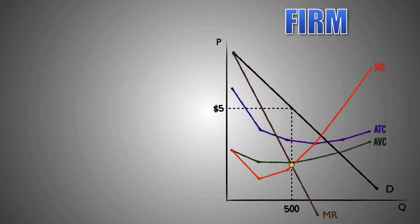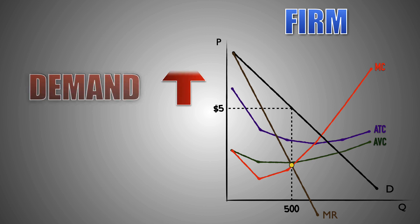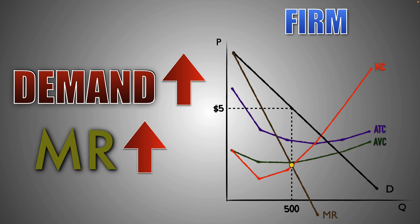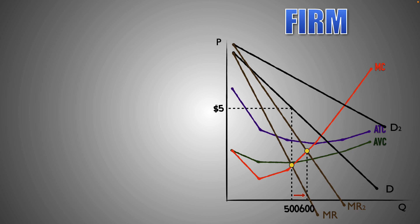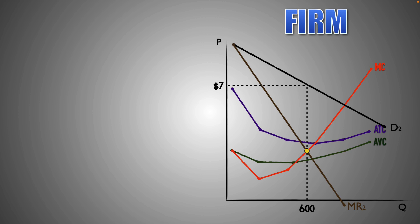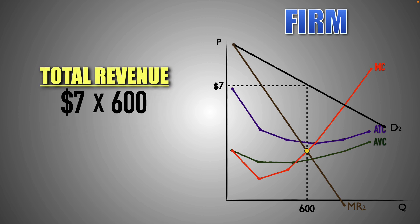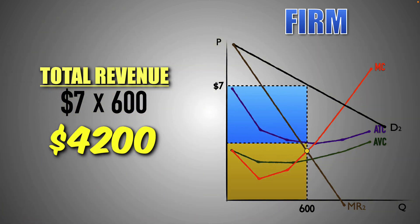Changes in market demand can cause changes in output, revenue, and profits for an imperfectly competitive firm. For example, suppose that demand for Good M increases, signaling that consumers are willing and able to pay higher prices for Good M at every output level. This change in market demand will cause an increase in both the price per unit and the marginal revenue earned by each additional unit sold in the industry. This will be visualized with a rightward shift of the demand and marginal revenue curves. With a greater marginal revenue per unit, the firm will seek a new profit maximization point and increase the quantity of Good M it produces until marginal revenue equals marginal cost, allowing the price-making firm to set a new market price along the demand curve at $7 per unit. Now that product price has risen to $7 and the firm has boosted its output to 600 units, the firm will increase its total revenue from $2,500 to $4,200, leading to greater economic profits for the firm.